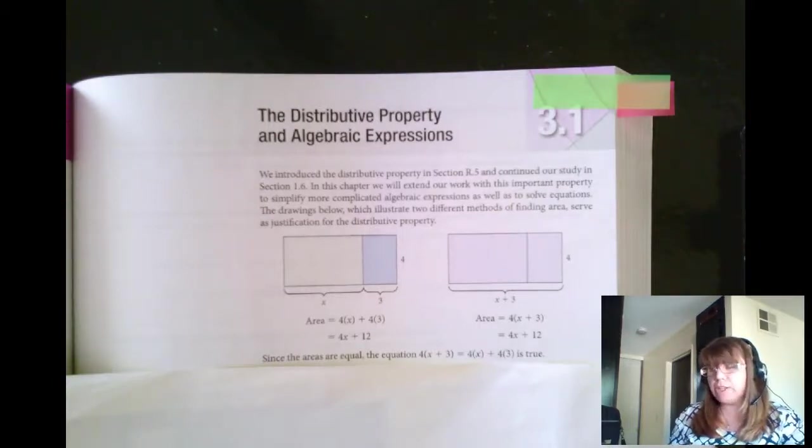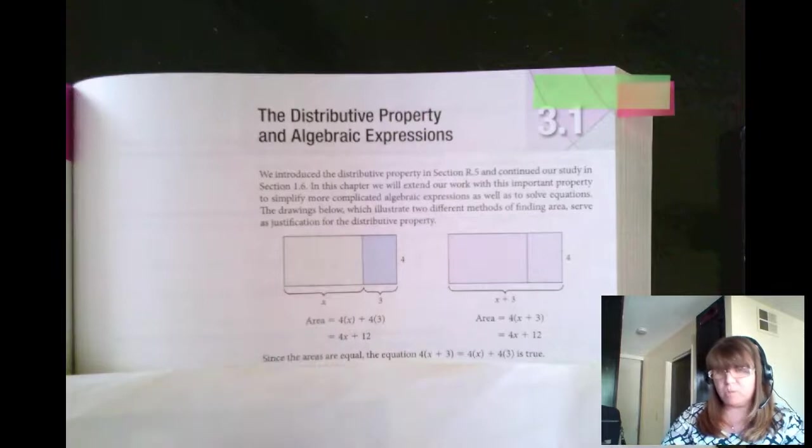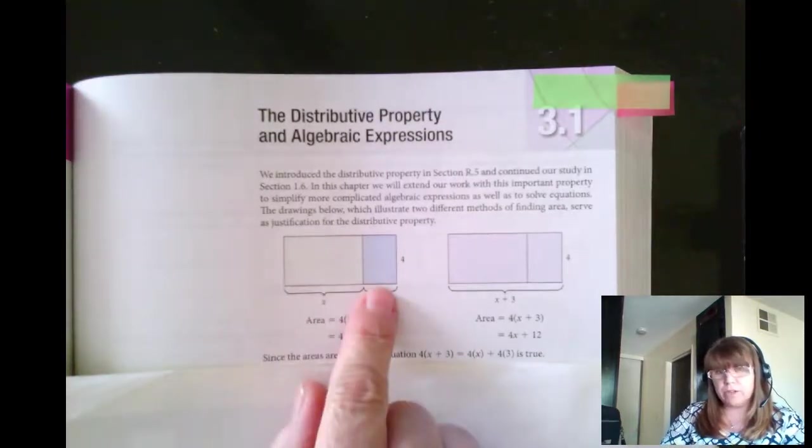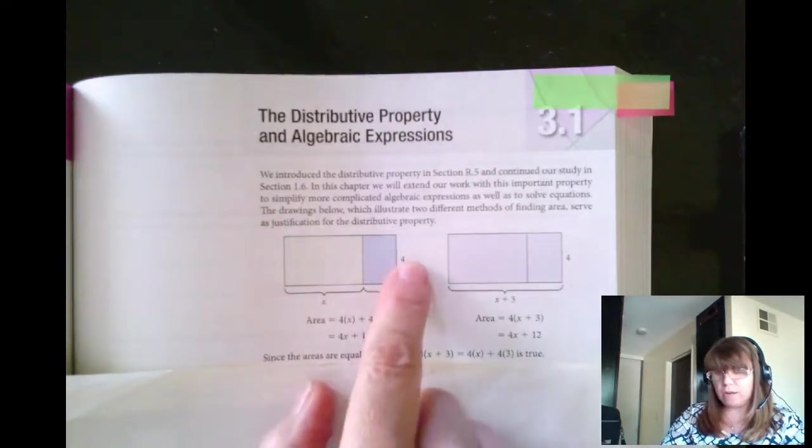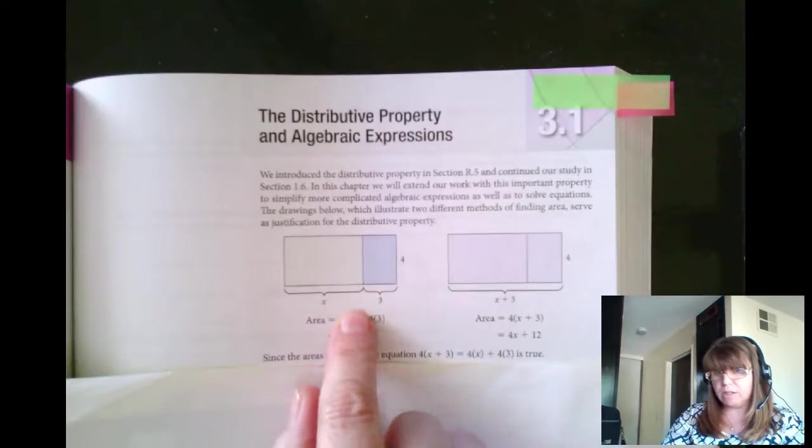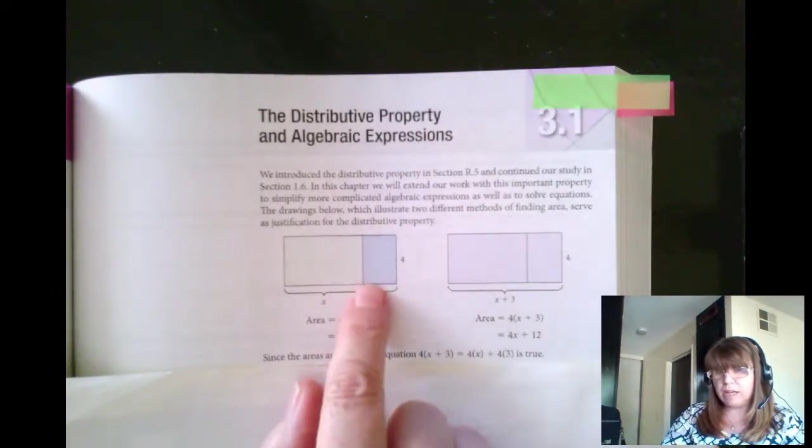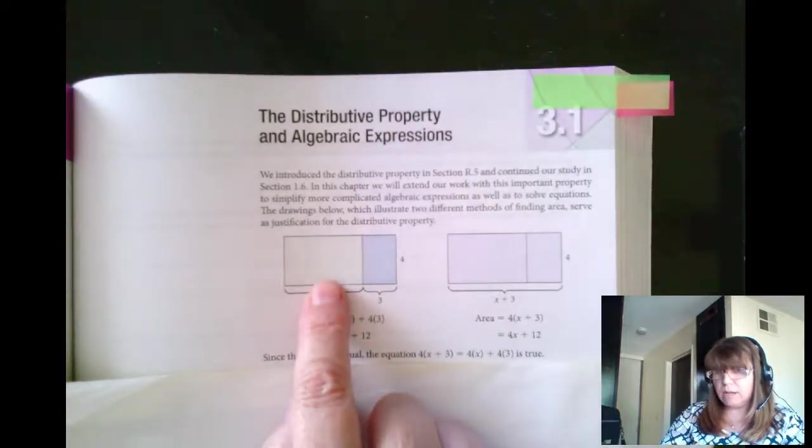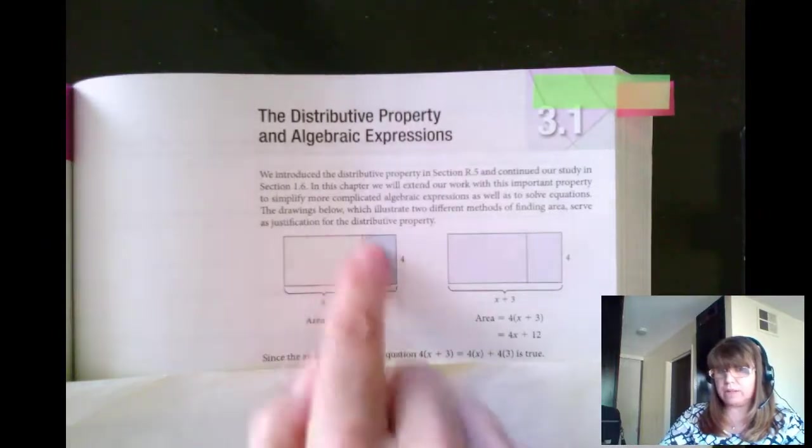Back in an earlier lecture, probably in class, you might remember that I showed you the distributive property in two rectangles. The first rectangle has the length of x and the width of 4, and the second rectangle has a length of 3 and the width of 4. If you calculate the area, you could calculate the area of one rectangle and add it to the other rectangle and you'll get the area of the big rectangle.